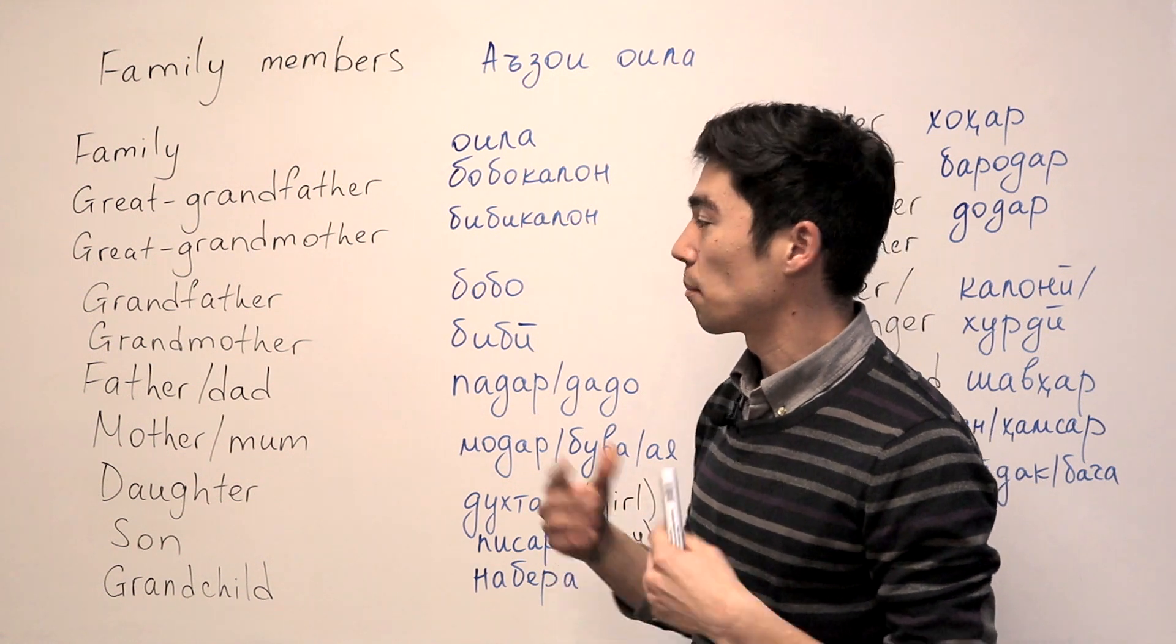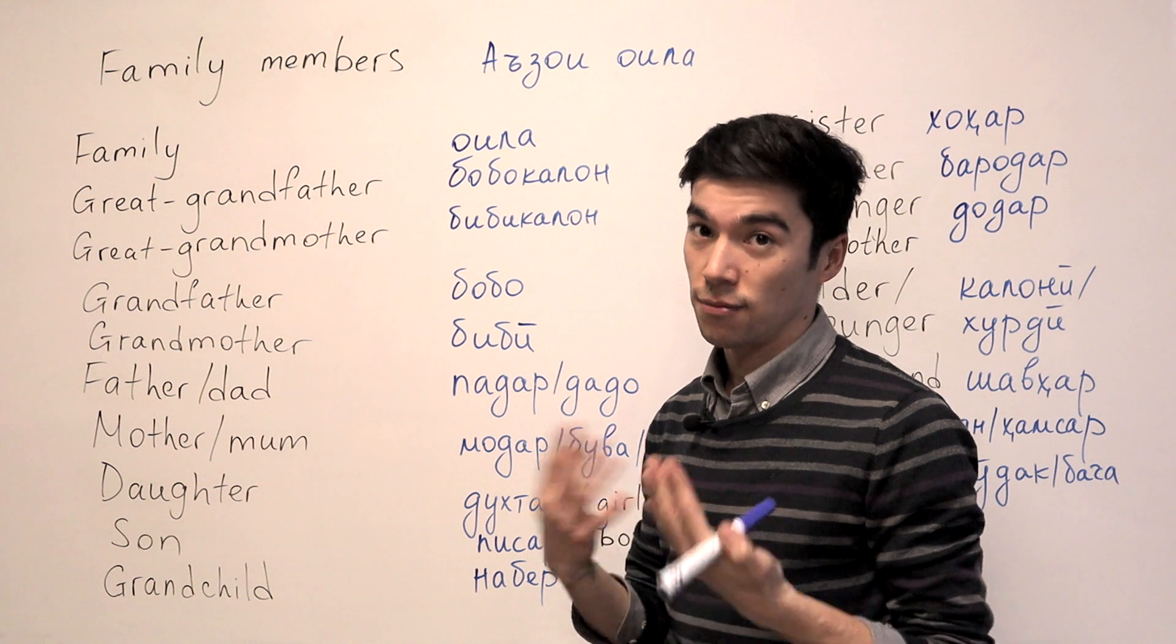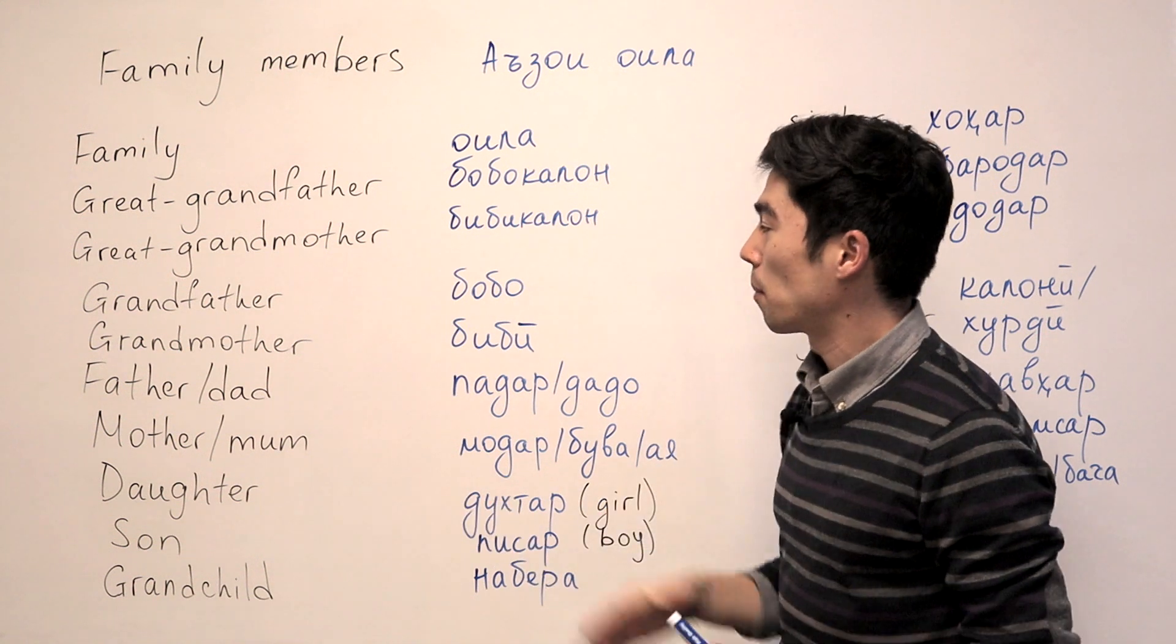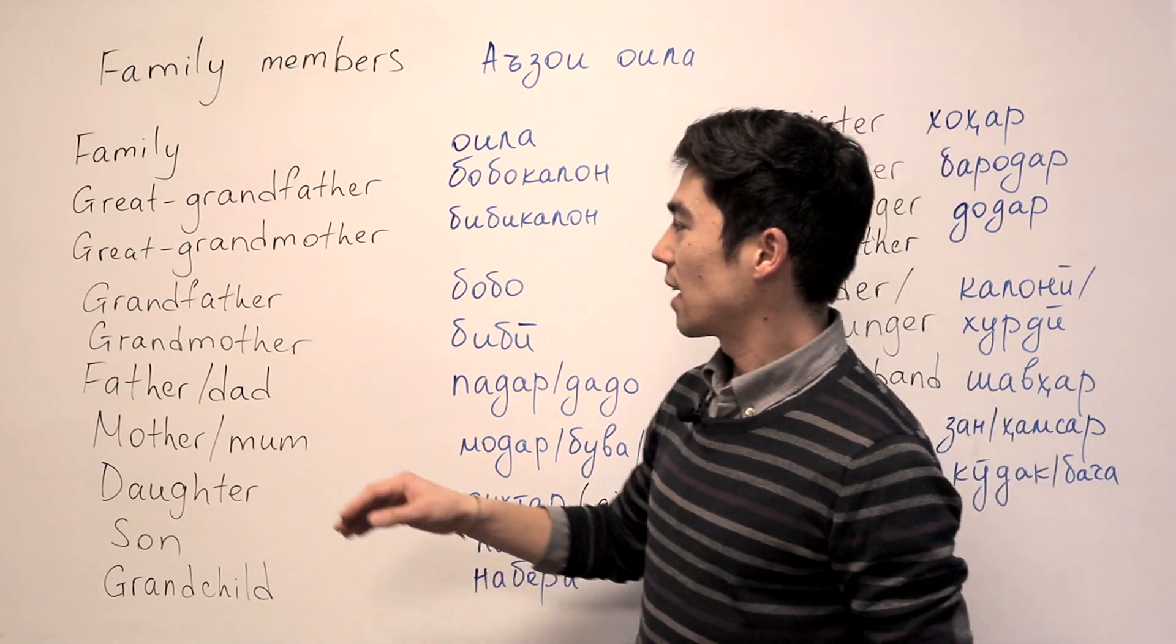And in some places people say Bojom. So I call my grandmother Bojom. But Bibi is more like formal, common.